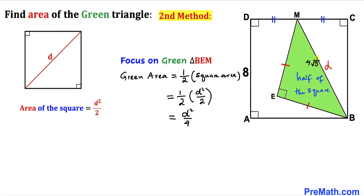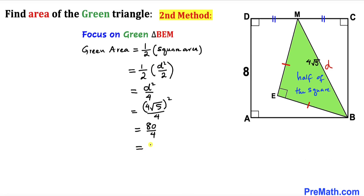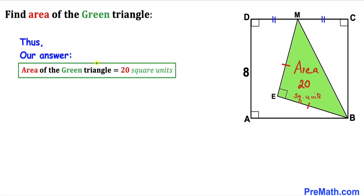We know the diagonal d = 4√5, so substituting: area = (4√5)²/4 = 80/4 = 20. Therefore the area of the green triangle is confirmed to be 20 square units using this second method as well.